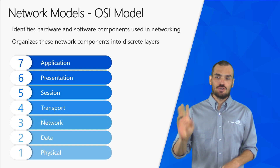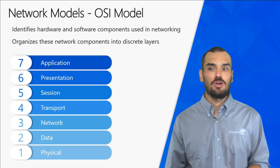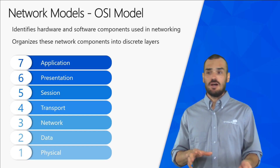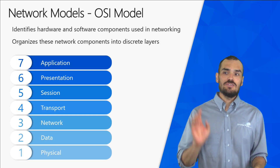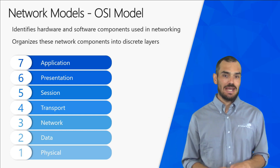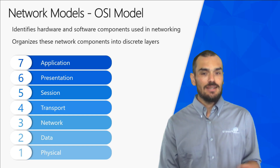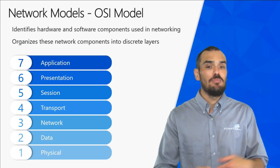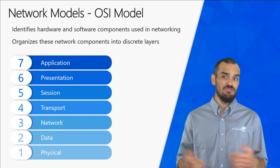The first goal of the OSI model is to identify both the hardware and software components used in networking — that means devices, ports, and protocols. Once these components are identified, they get organized into discrete layers. Each layer technically exists on its own, but it can feed information into layers above it or below it if need be.